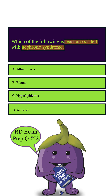Let's start with A. Albuminuria is, just like the name implies, the presence of albumin in the urine. It's a key characteristic associated with nephrotic syndrome, related to the kidney's inability to retain protein. So this is definitely not the correct answer — we can eliminate it.